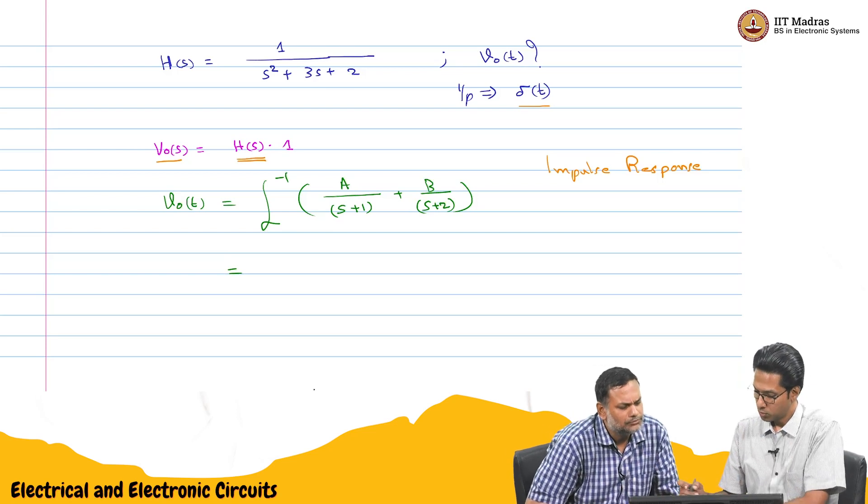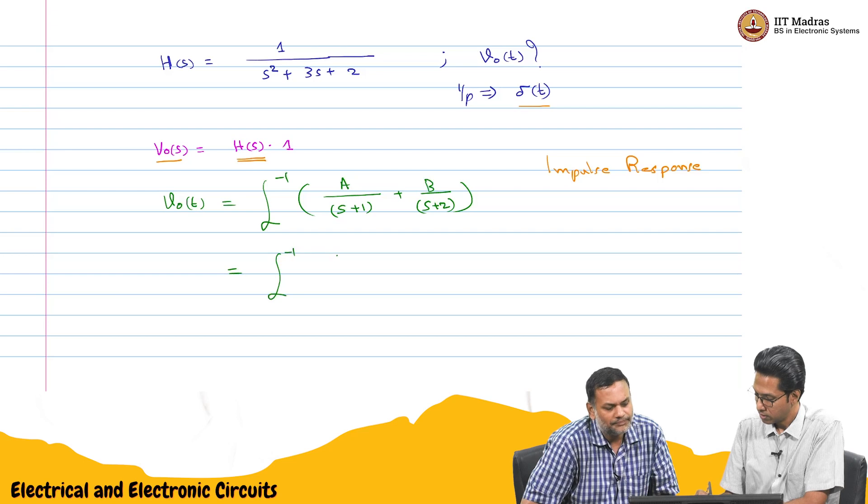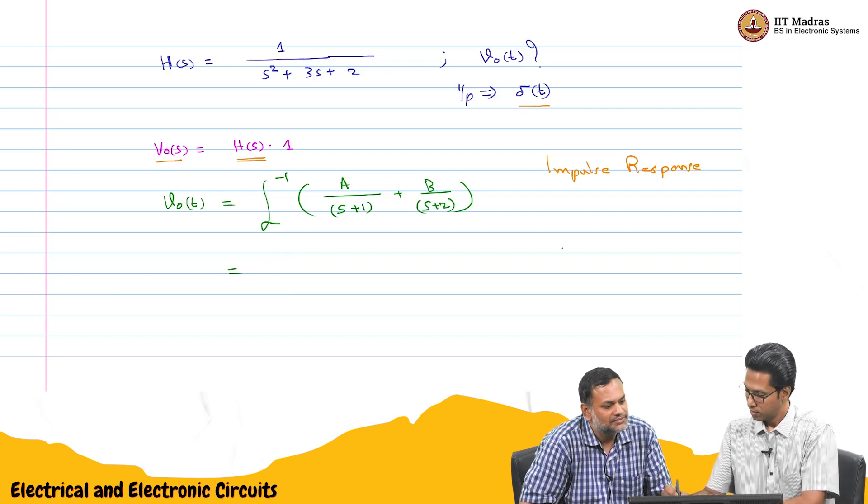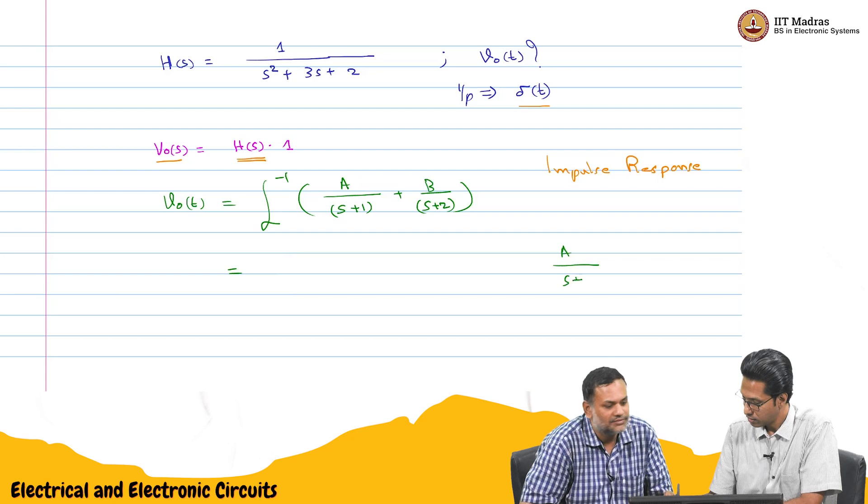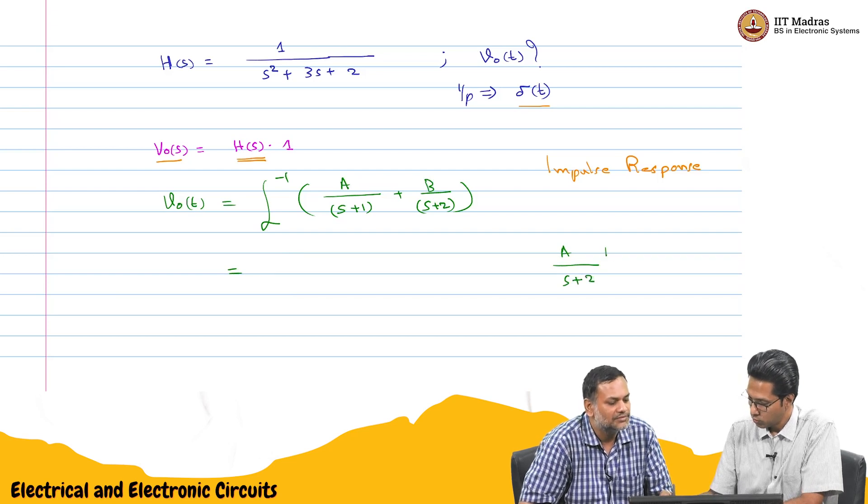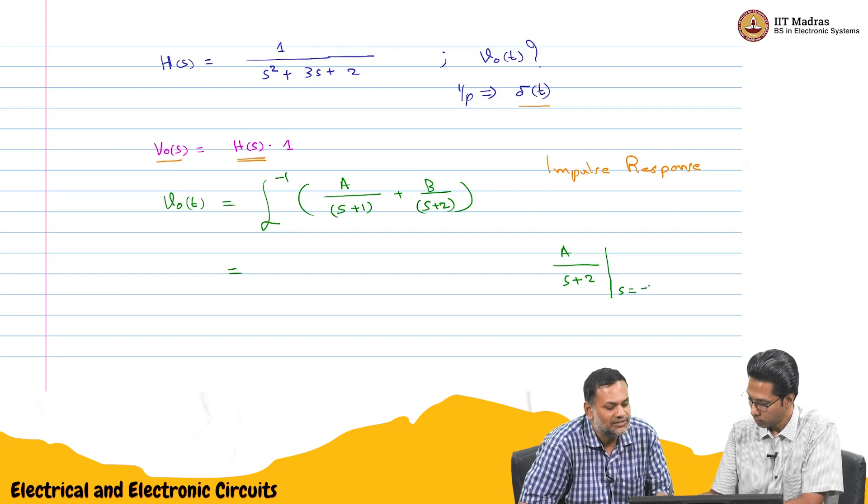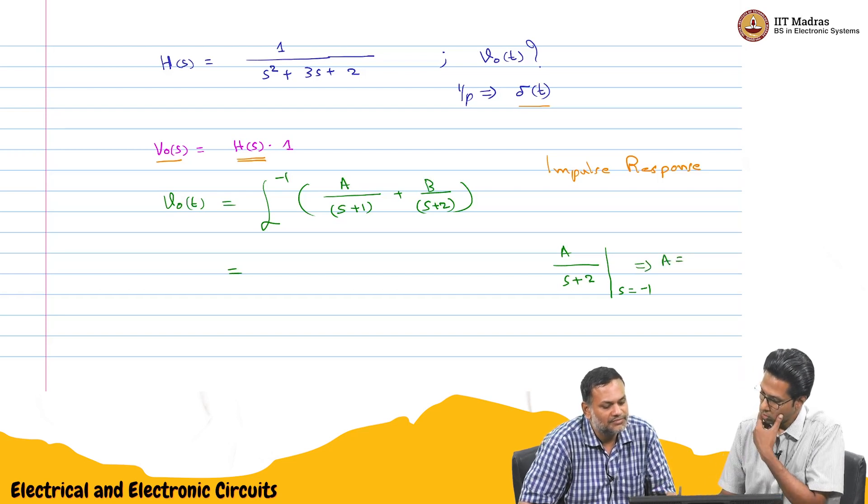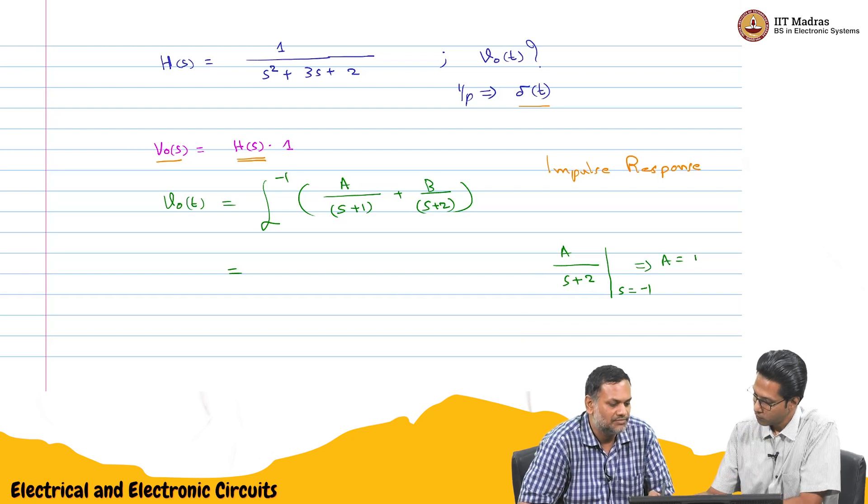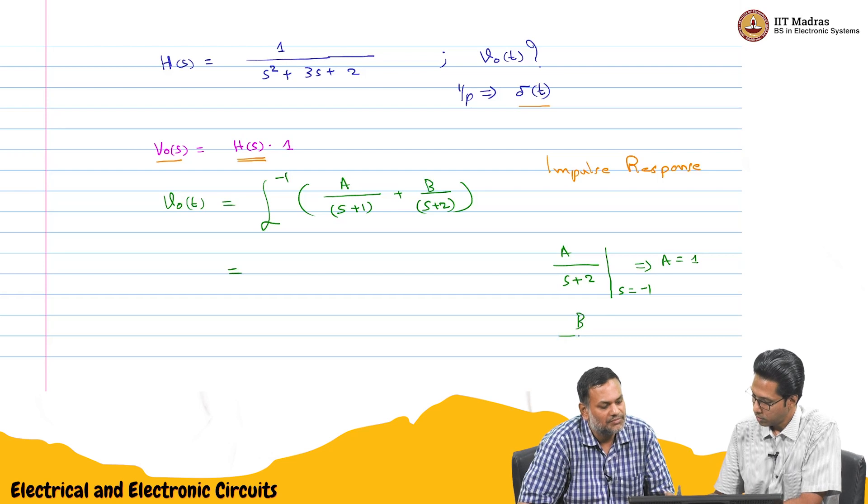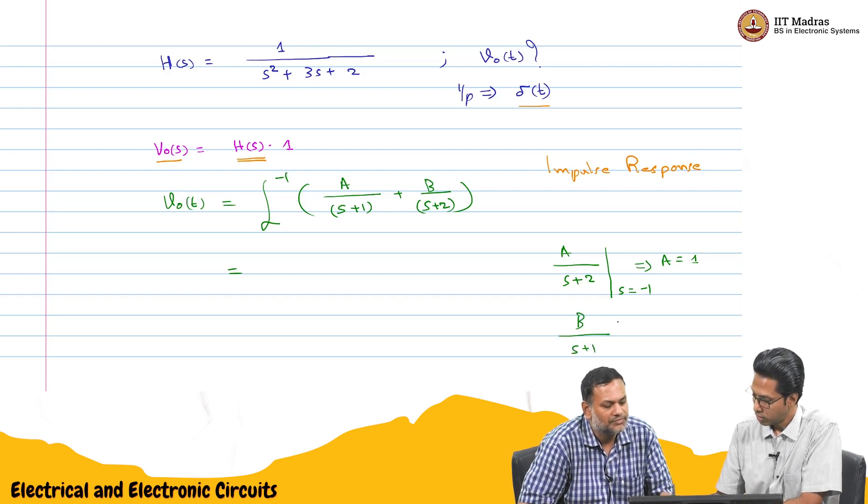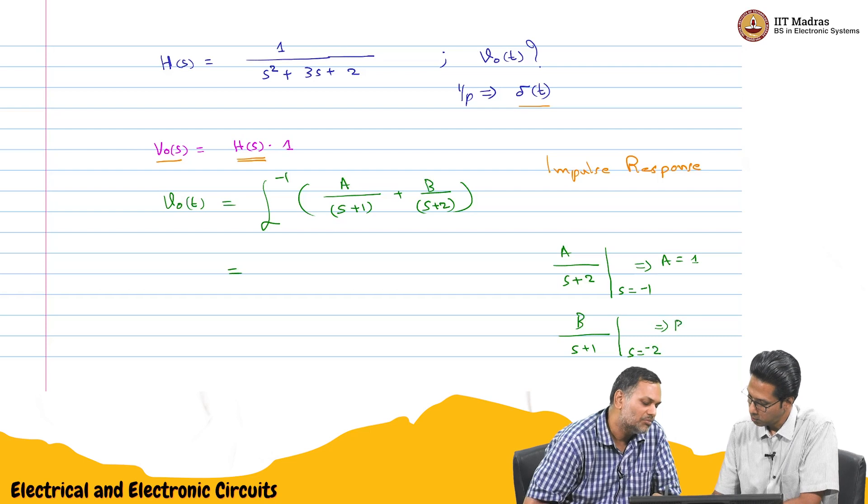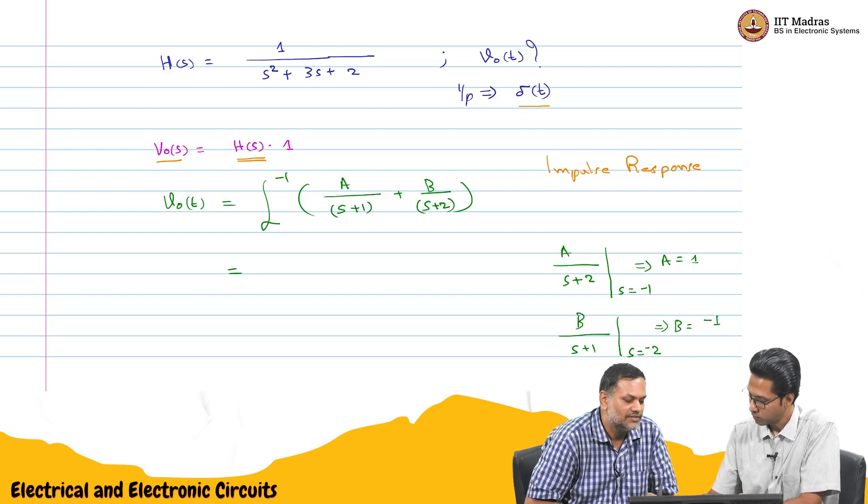What we used to do, this is we have to find out A and B. A by s plus 2 for s equal to minus 1. So, we get A equal to 1. Similarly, B by s plus 1 for s equal to minus 2. So, B is minus 1.